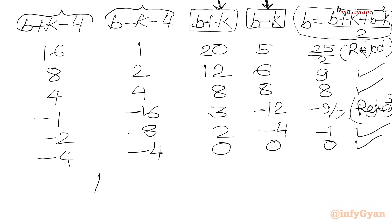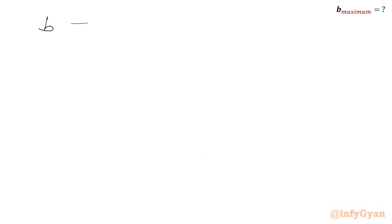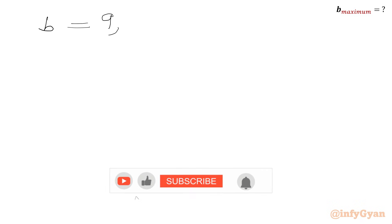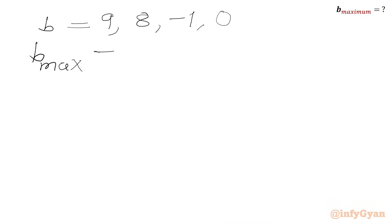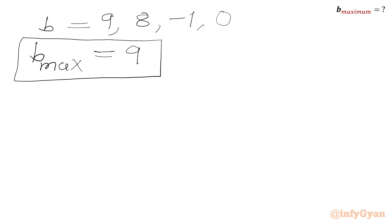The possible values of b are 9, 8, −1, and 0. Therefore, the maximum possible value of b is 9. Our answer is 9.